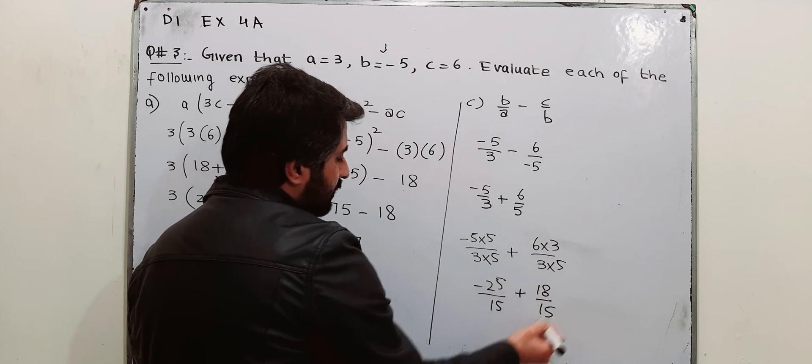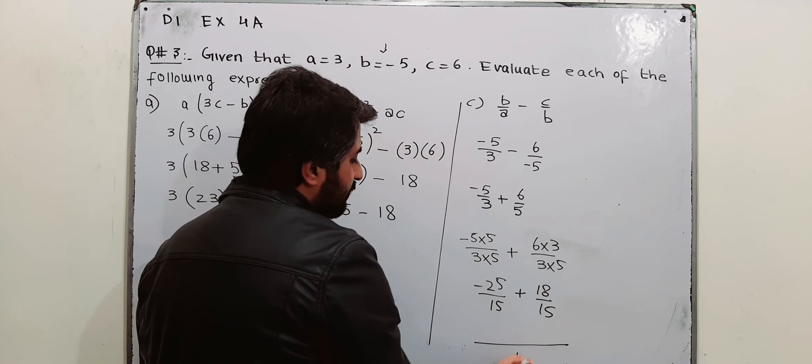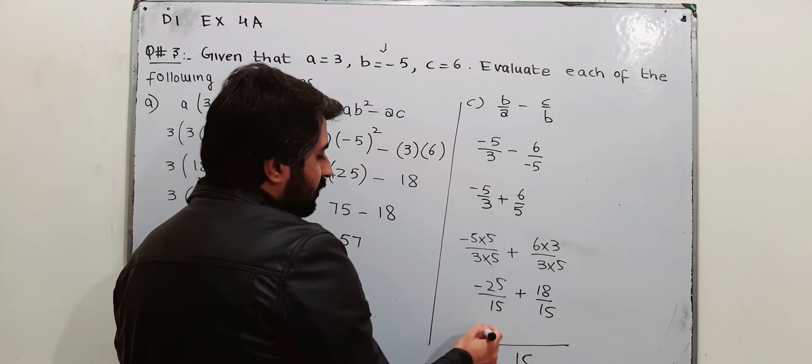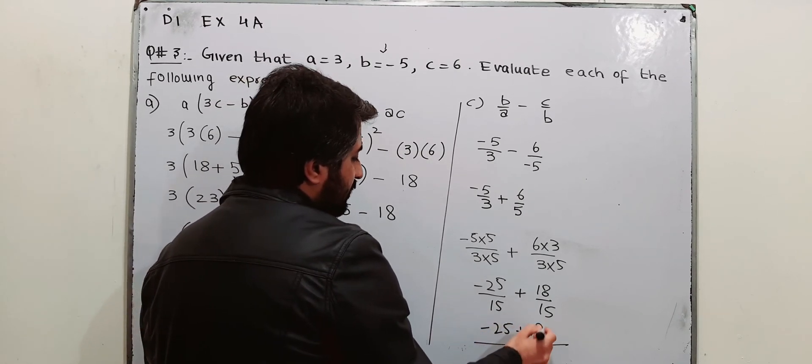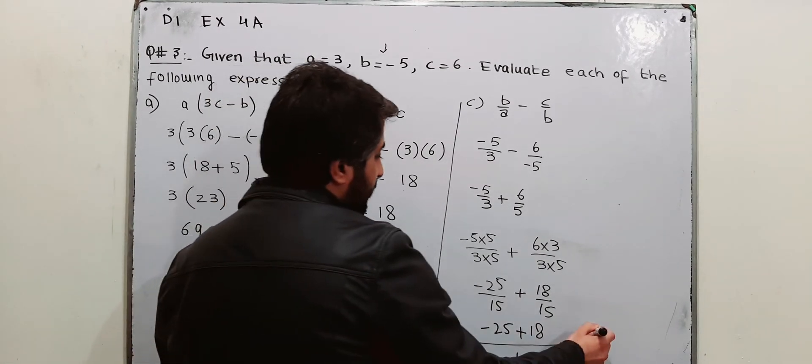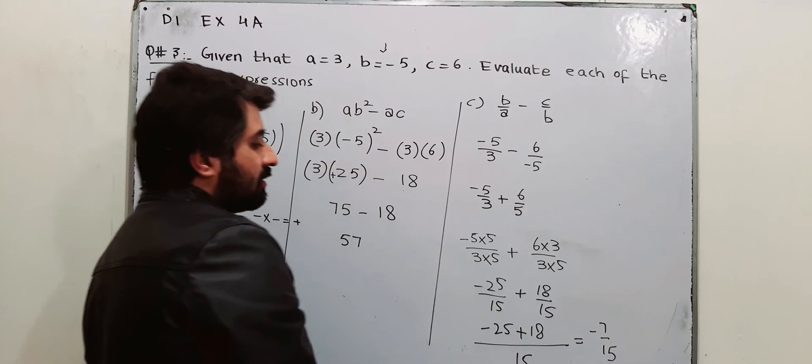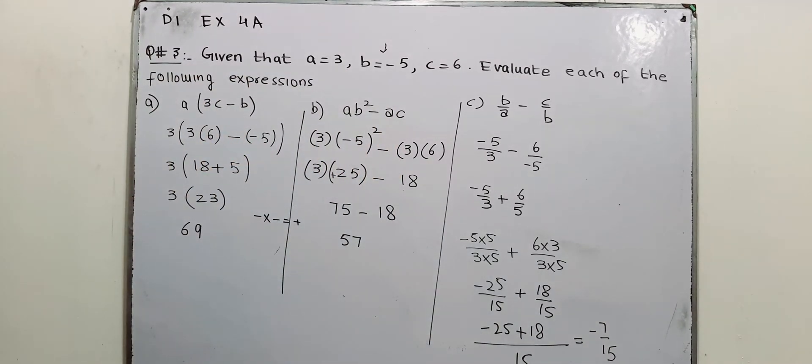Now, denominators are same. The LCM will be 15. You will be having minus 25 plus 18 in numerator. And that will be equal to minus 7 over 15. This is the solution for part number C.